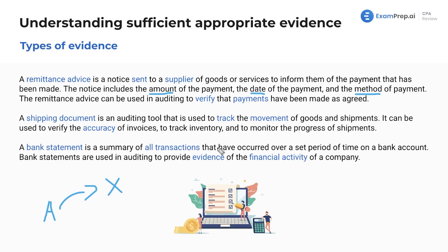Next we have the bank statement, which is a summary of all transactions that have occurred over a set period of time on a bank account. You're probably all quite familiar with your own personal bank statements — definitely a good thing to look at for your own personal finance. Bank statements are used to provide evidence of the financial activity of a company and should agree with the cash activity in the general ledger.